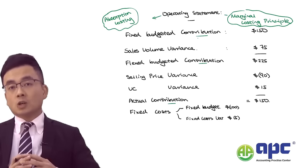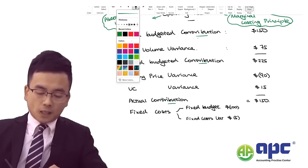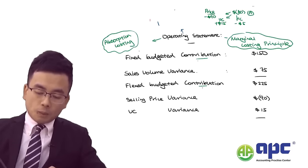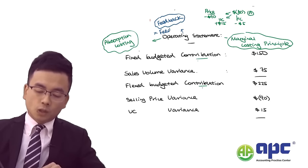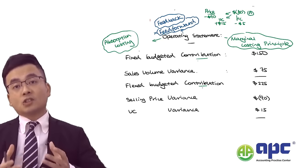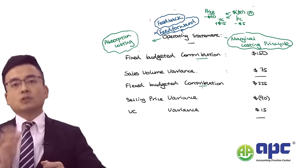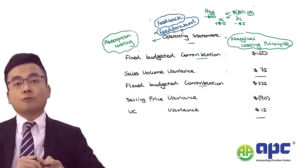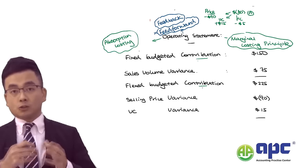The operating statement acts as a feedback control system, comparing actual results with budget. This is unlike feedforward control — examples include target costing and cash flow budgets — which compare estimated results with what we plan, allowing corrective action in advance to align with our goals.